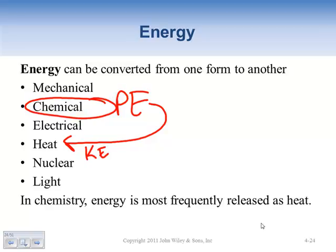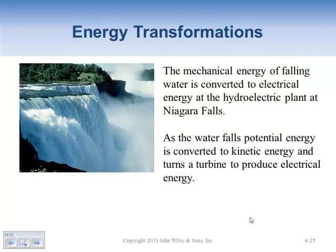Things move faster as they get heated up. Energy transformations: the mechanical energy of falling water can be converted into electricity at hydroelectric plants. At Niagara Falls or the Hoover Dam, the force created by falling water spins a turbine to generate electricity. As magnets pass through a field, it pushes electrons through the wire. The high potential energy is converted into kinetic energy, which turns the turbine.